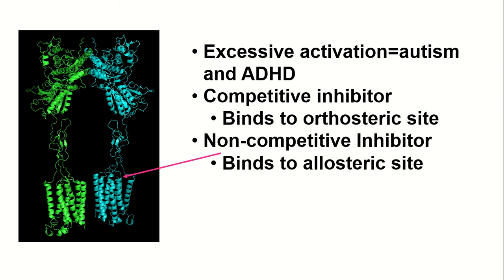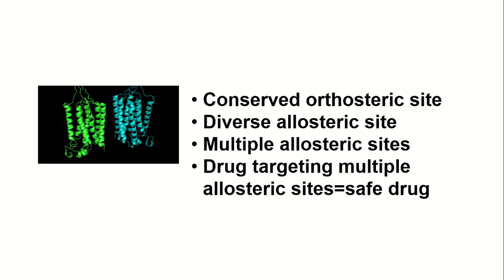Non-competitive inhibitors bind to the allosteric site located on the 7 TM domains to reduce glutamate's effects. Because allosteric sites show less conservation across subtypes, non-competitive inhibitors will show better selectivity. Given this structural feature, we can propose that a non-competitive drug targeting these allosteric binding sites will have better selectivity.